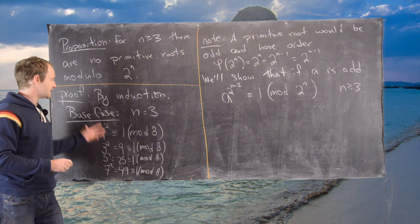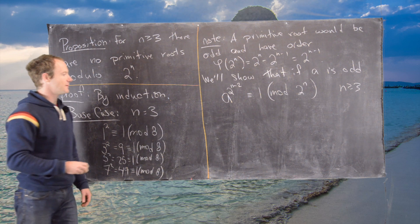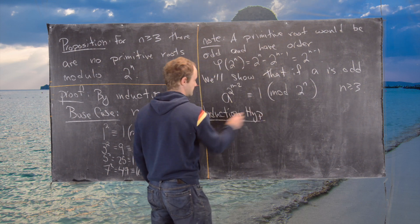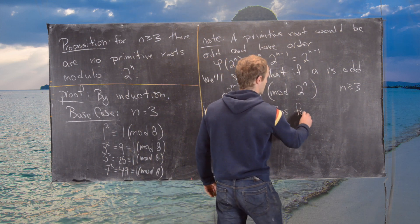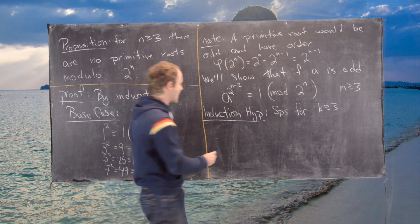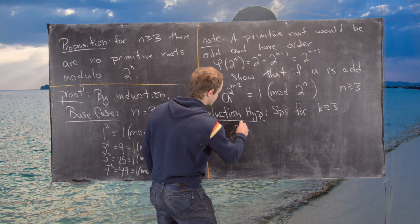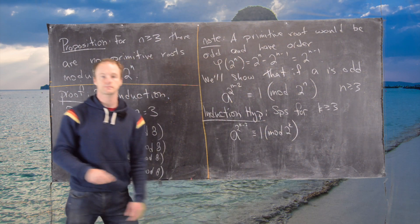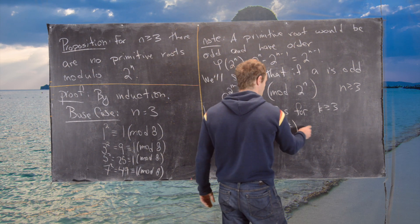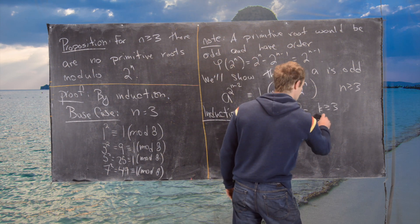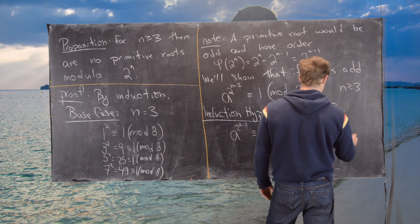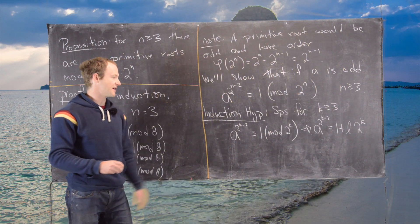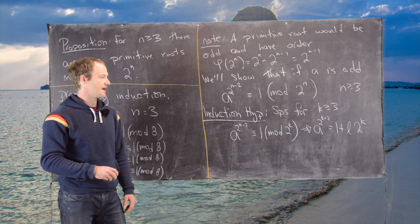And as I pointed out, we're doing that by induction. We've kind of already done the base case. And now we'll make an induction hypothesis. And that is, suppose for some k bigger than or equal to 3, we have a to the 2 to the k minus 2 is congruent to 1 mod 2 to the k. But now, notice that means that we can write a to the 2 to the k minus 2 equals 1 plus l times 2 to the k, where l is some integer. That's just the definition of congruence modulo 2 to the k.